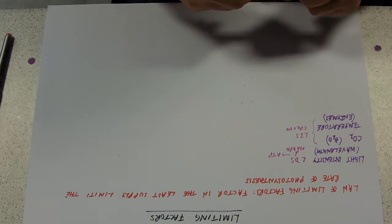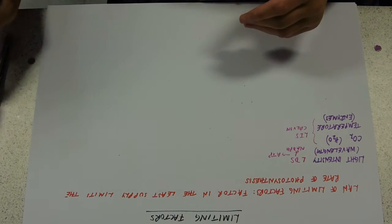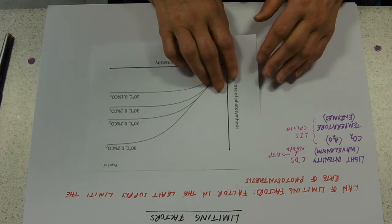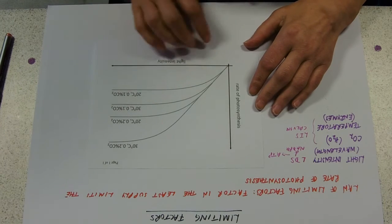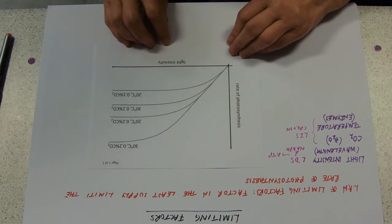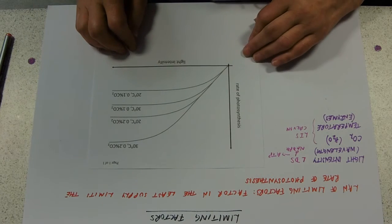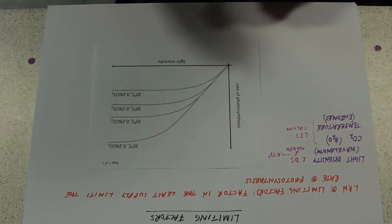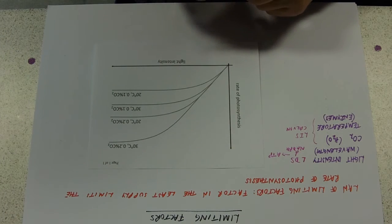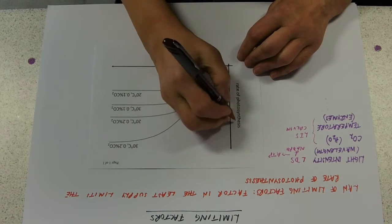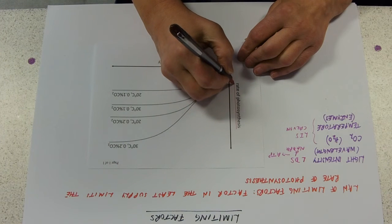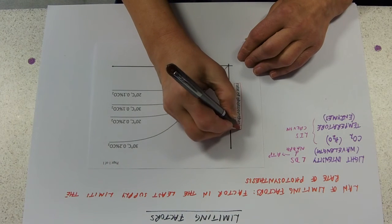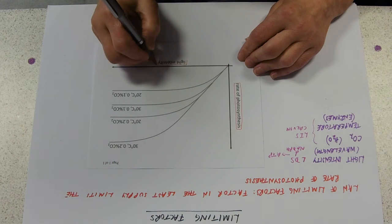So let's have a look at some graphs then - we love a graph. This is a pretty typical limiting factor graph. Remember that the first thing to do when you look at a graph is to determine what the axes are. So we've got rate of photosynthesis on the side and light intensity at the bottom.